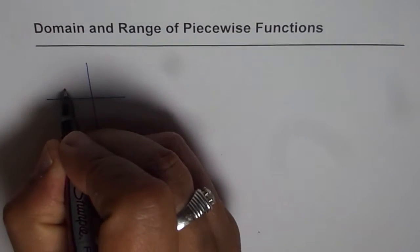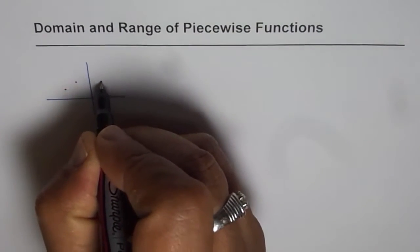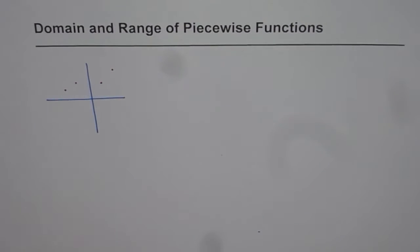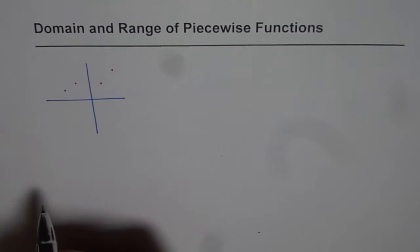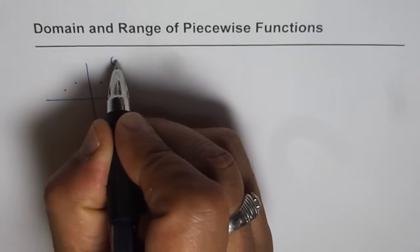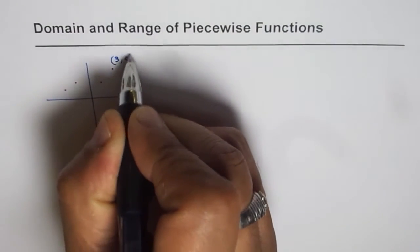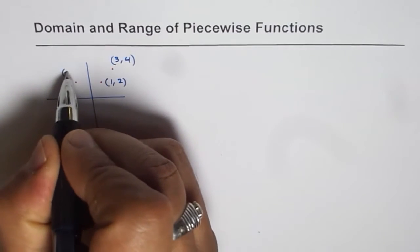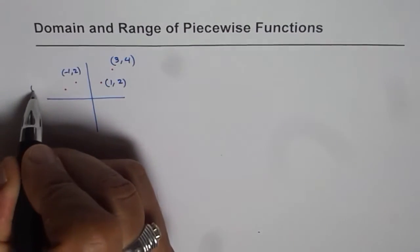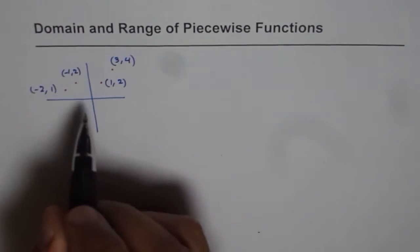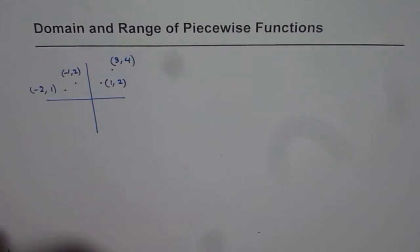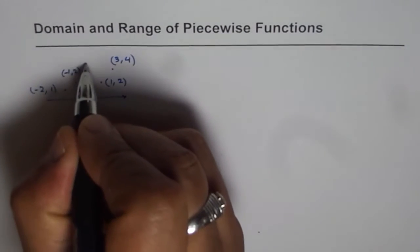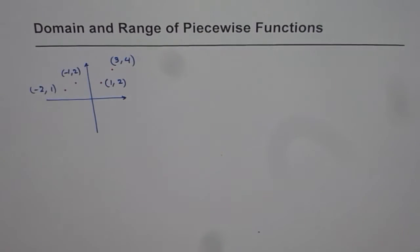Let us say we have a few points on a function. This is not continuous, just taking some points at random. Let's say the coordinate values of these points are: this point is 3 comma 4, this point is 1 comma 2, here we have minus 1 comma 2, and then we have minus 2 comma 1. Let us say this function is a set of four points. Now, how will you write domain and range for this function? That is the question we need to answer.